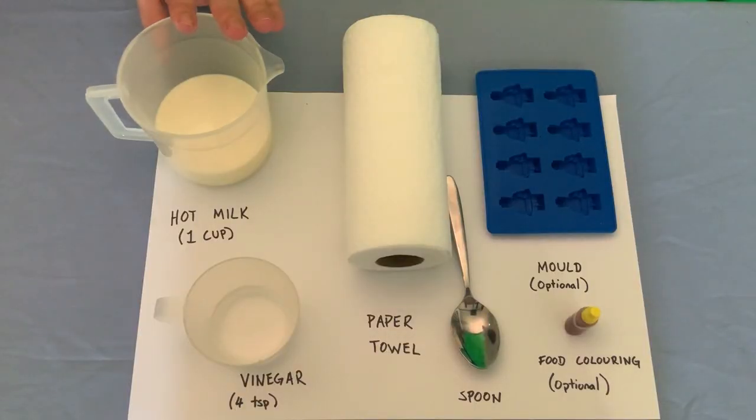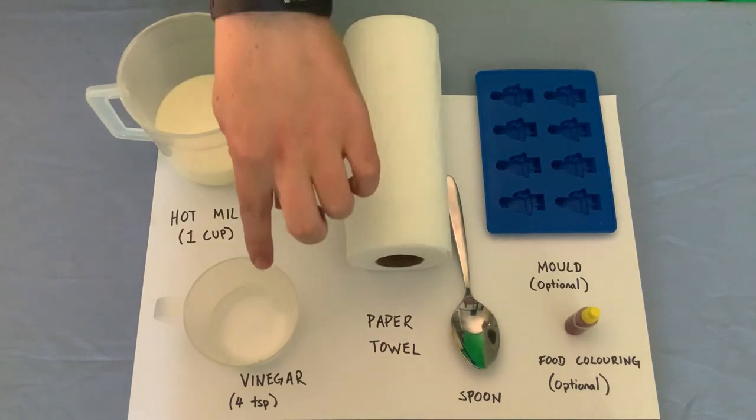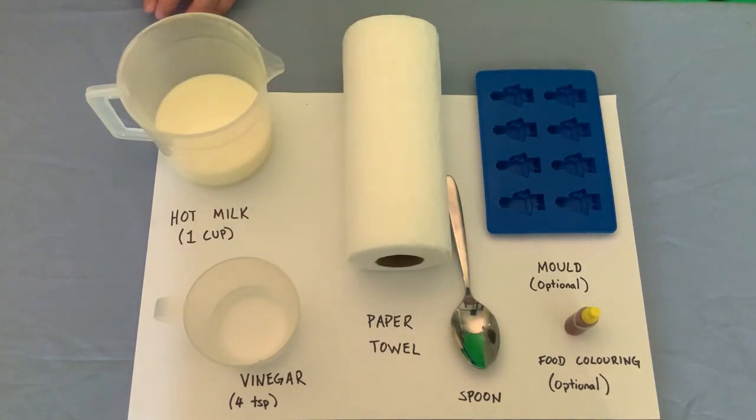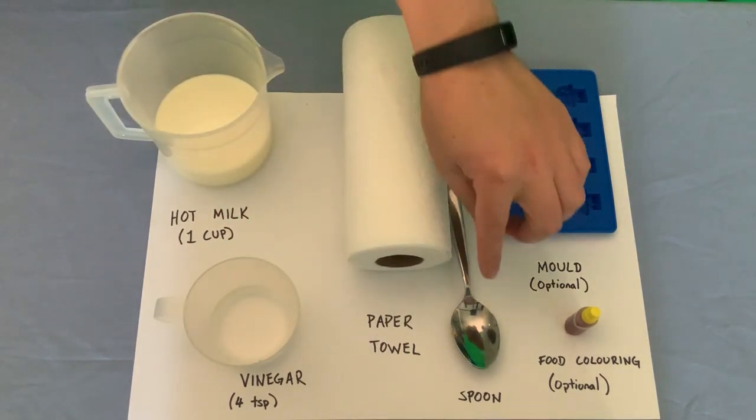If you want to join along today, here's what you'll need. One cup of hot milk. Doesn't need to be boiling, but about what you'd have a hot chocolate at. Four teaspoons of vinegar, any type of vinegar will do. Some paper towel and a spoon.